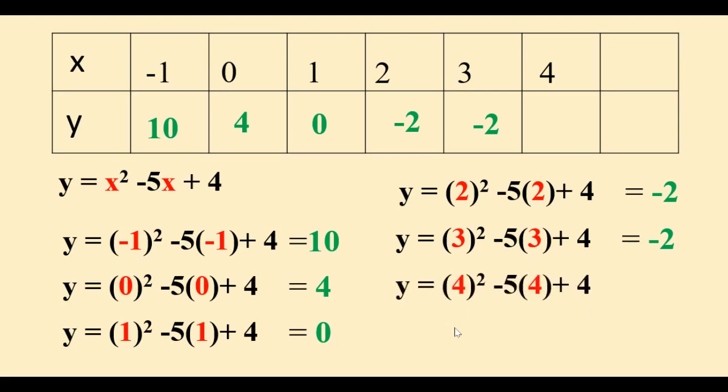Substituting 4 in the equation gives us 0. And finally, the last value is 5, which once we substitute, gives us 4.